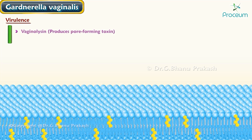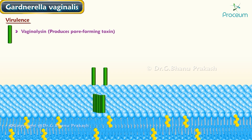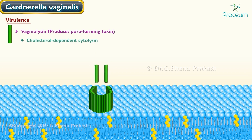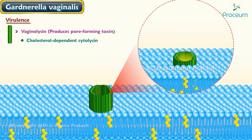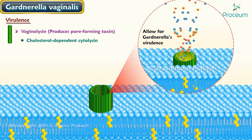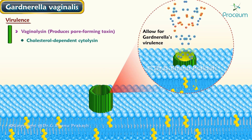Gardnerella vaginalis produces a pore-forming toxin called vaginalisin that can only affect human cells. Vaginalisin is a cholesterol-dependent cytolysin that initiates complex signaling cascades, inducing target cell lysis and allowing for Gardnerella's virulence.